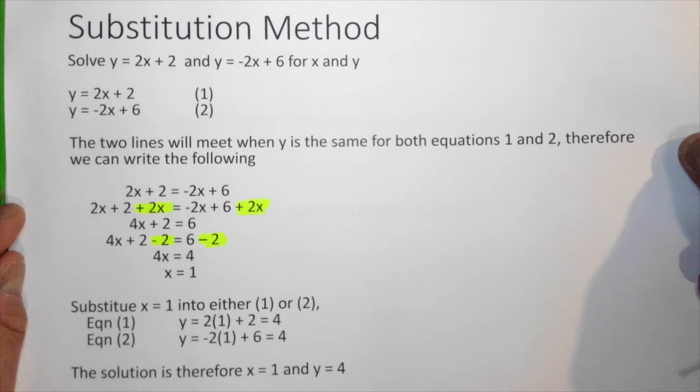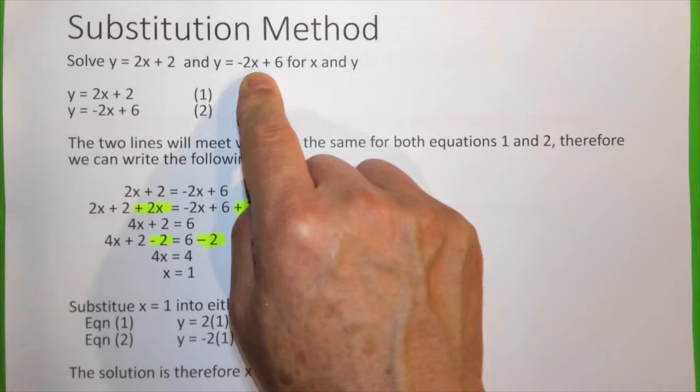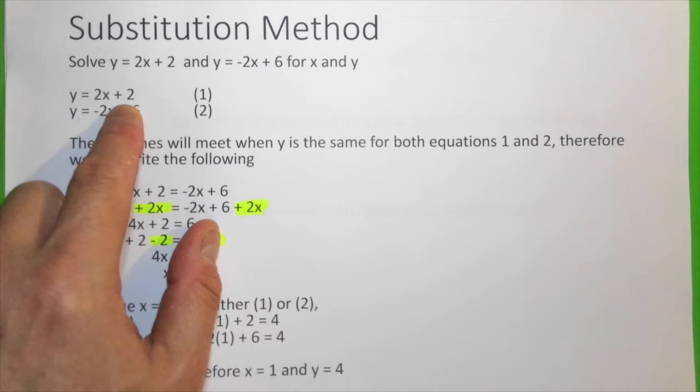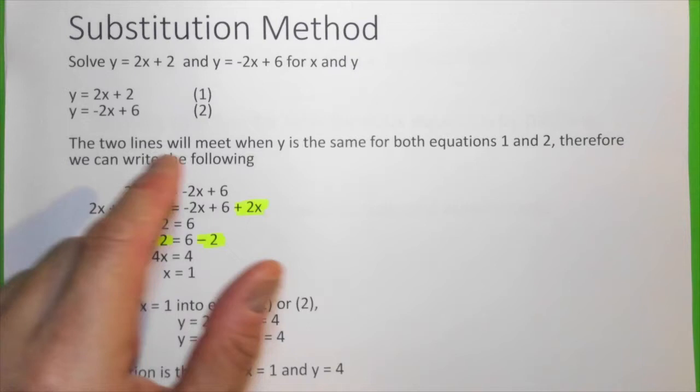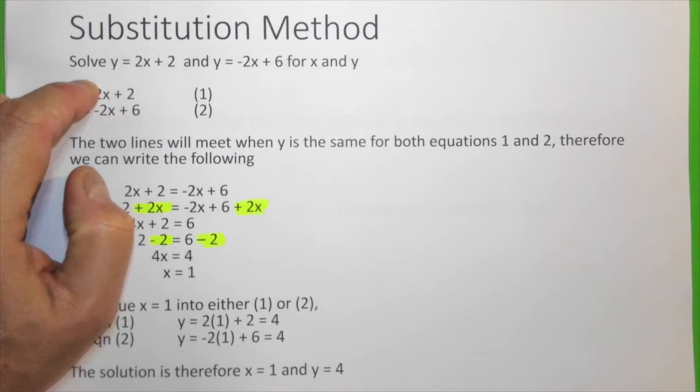We need to solve y equals 2x plus 2 and y equals minus 2x plus 6 for x and y. We call y equals 2x plus 2 equation 1 and y equals minus 2x plus 6 equation 2. We know that y is the same for both equations 1 and 2 when the two lines meet. Therefore, we can equate: 2x plus 2 equals minus 2x plus 6.